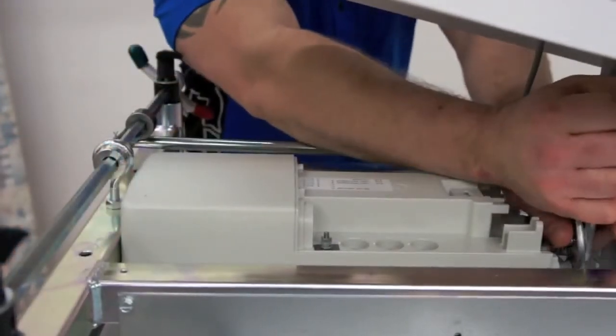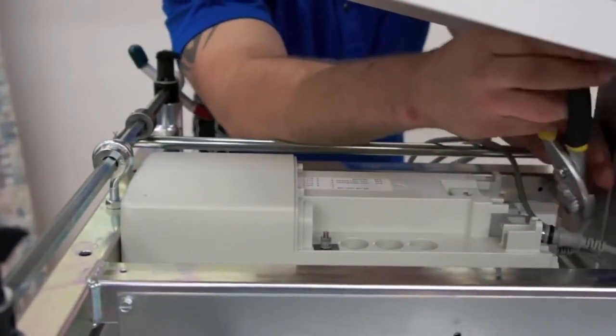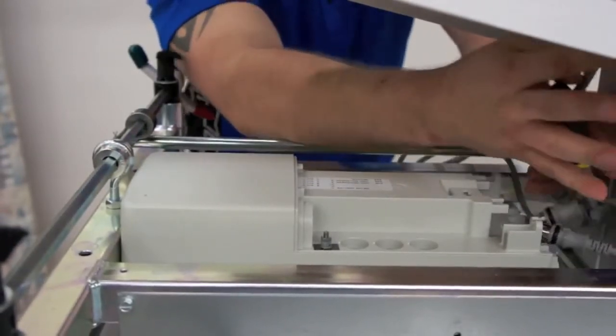Using your pliers, remove the wires from the control box, holding the strain relief when pulling the wires out.